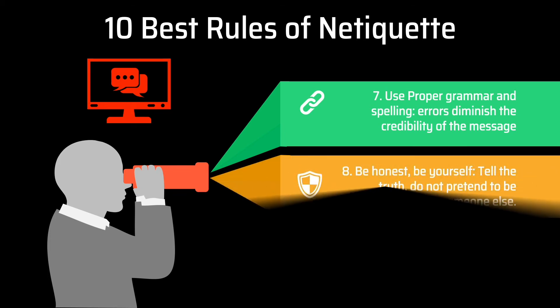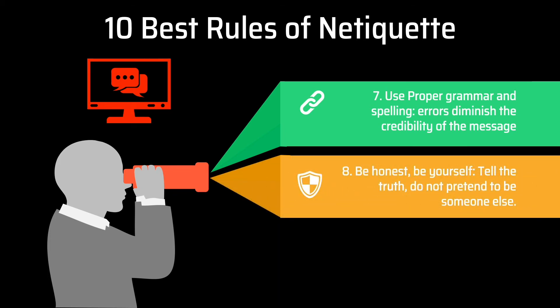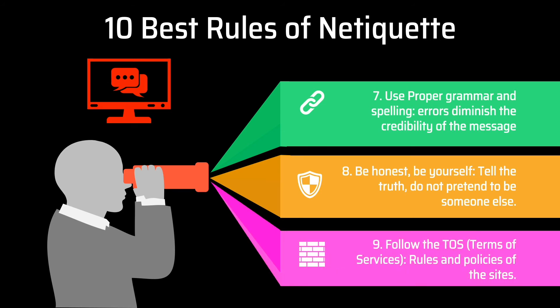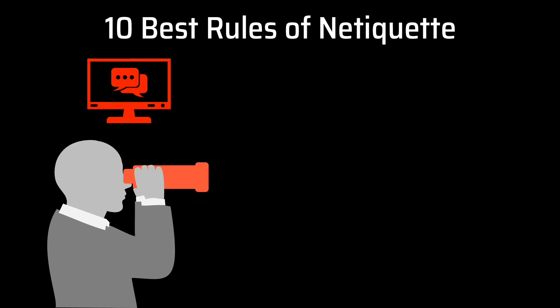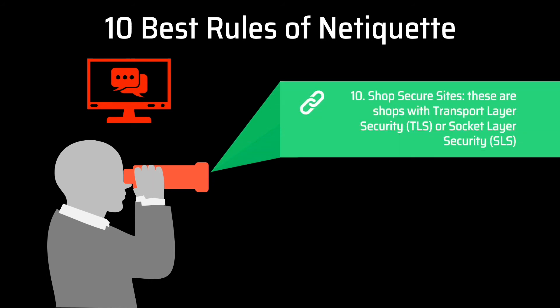Number eight, be honest. Be yourself, tell the truth, and do not pretend to be someone else. Number nine, follow the TOS or terms of service, rules, and policies of the sites. And ten, shop on secure sites — these are shops with Transport Layer Security, TLS, or Socket Layer Security.